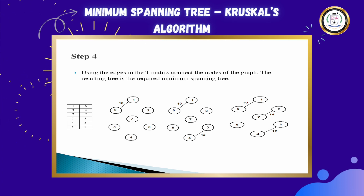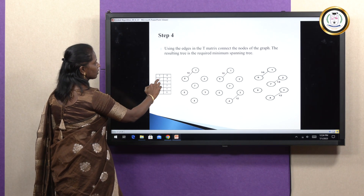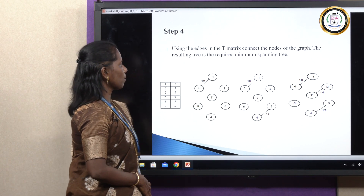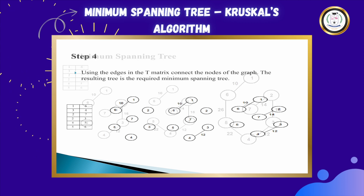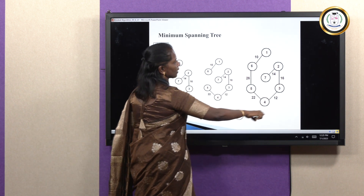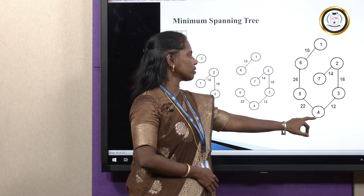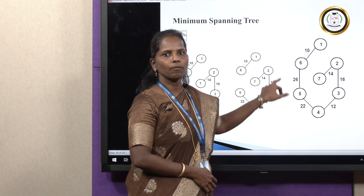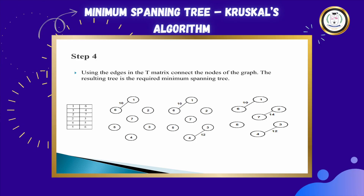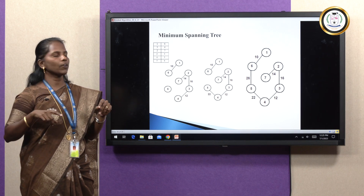This T matrix will act as input for constructing the minimum spanning tree. Connect nodes 1 and 6, then 3 and 4, then 2 and 7, then 4 and 5, and finally 5 and 6. After connecting all these, you will get your minimum spanning tree. All the nodes get connected — you can start from node 1, then visit 6, then 5, then 4, then 3, then 2, then 7. Your minimum spanning tree has all the nodes and the number of edges is N minus 1, which is 6.